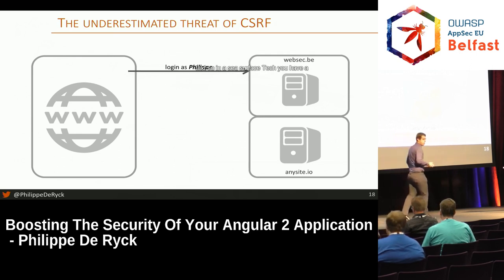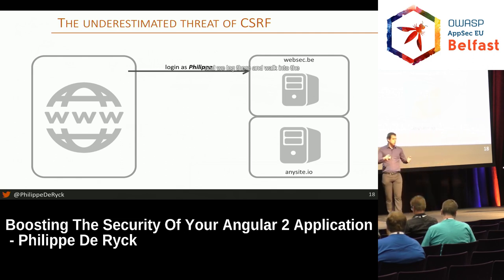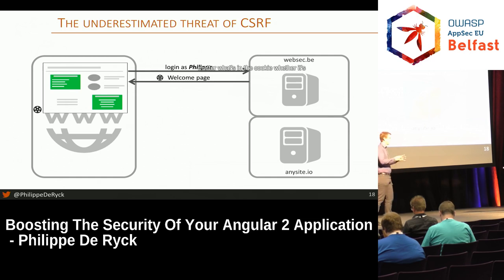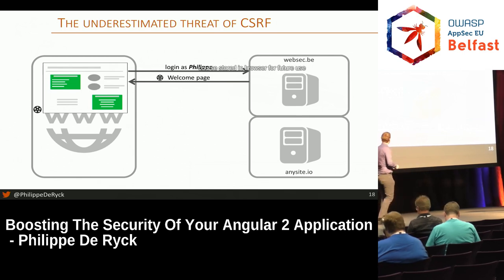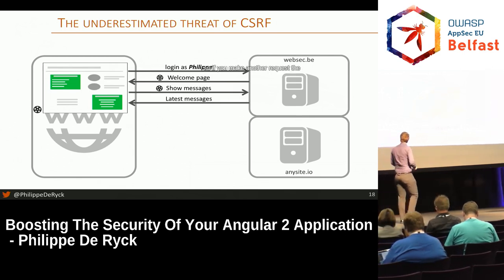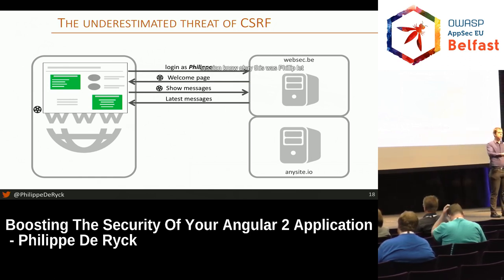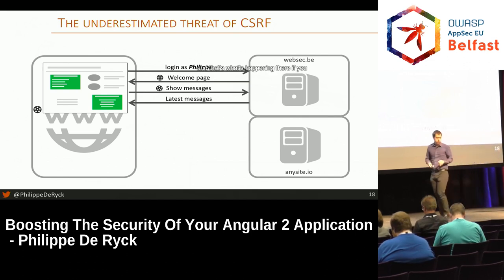In a CSRF attack, you have a legitimate site — say website.be — and you log in as a normal user. You get a page with a cookie. The cookie is stored in the browser for future use. So if you make another request, the browser attaches that cookie. The server looks up your session and knows this was you — it shows you your messages or whatever.